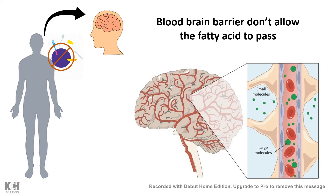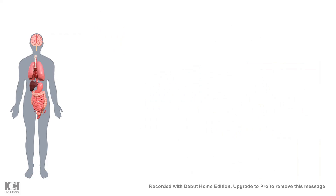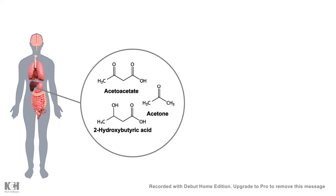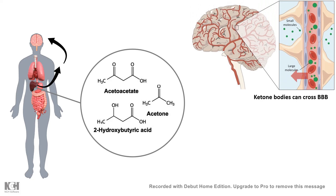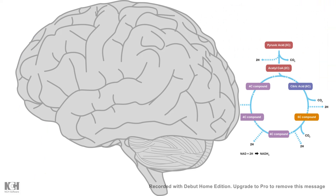The brain needs some source that can cross the blood-brain barrier, reach the brain, and fuel it in the absence of glucose. It turns out the reserve fuel that is very useful for the brain in a starved state is ketone bodies. Ketone bodies are produced in the starved state in the liver, channeled to the brain, can easily cross the blood-brain barrier, and can be metabolized as an alternative energy source to keep our brain going.